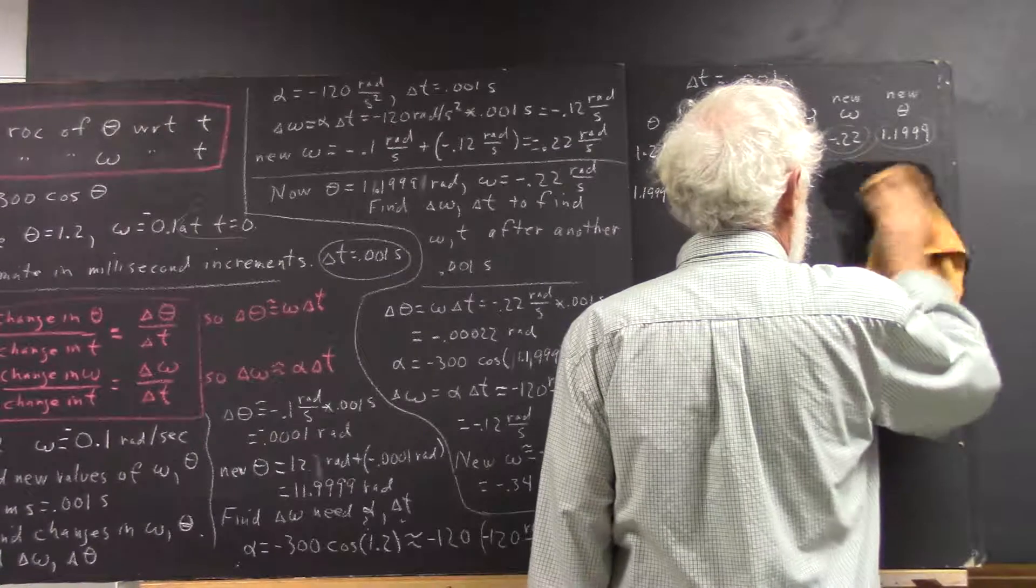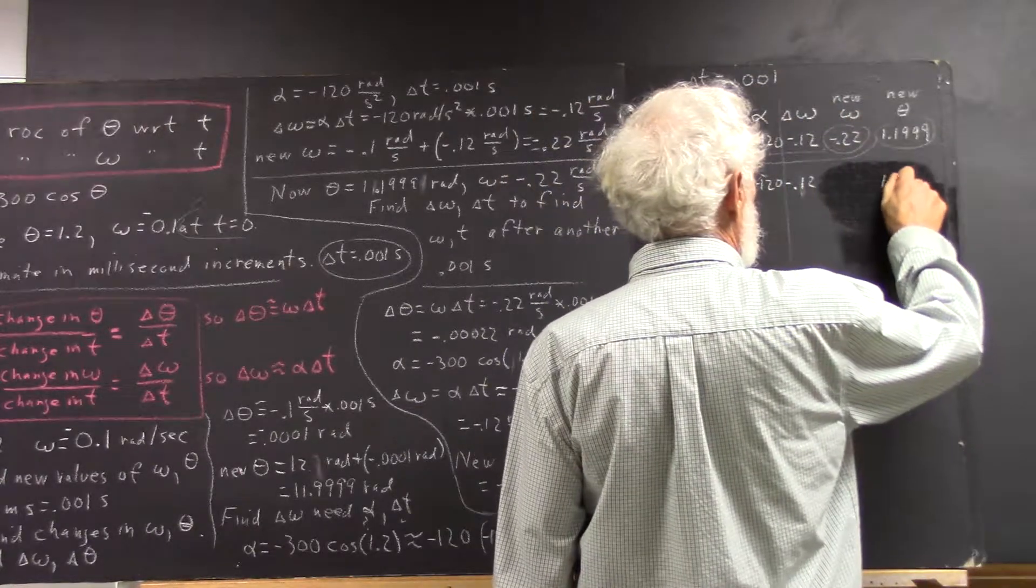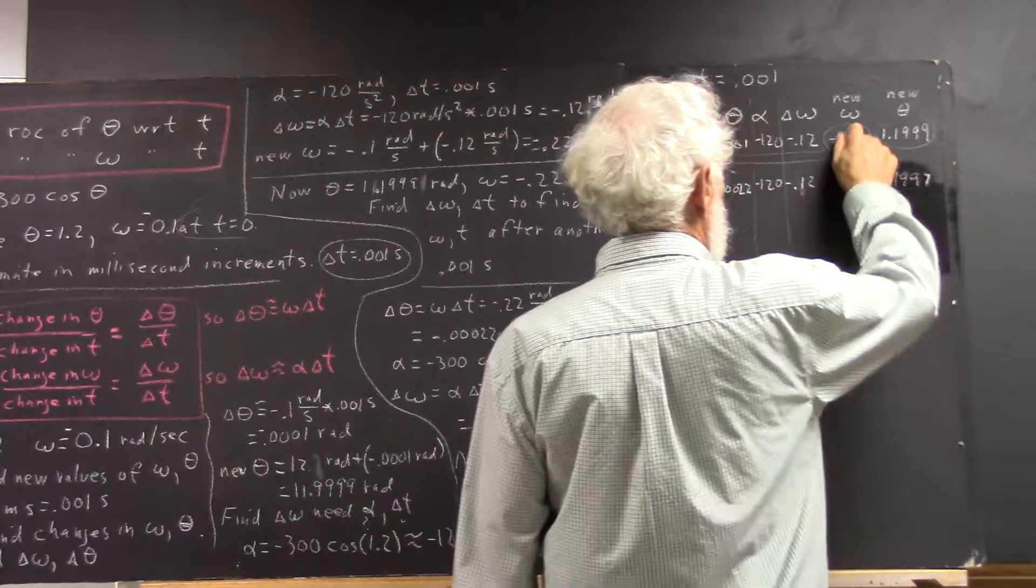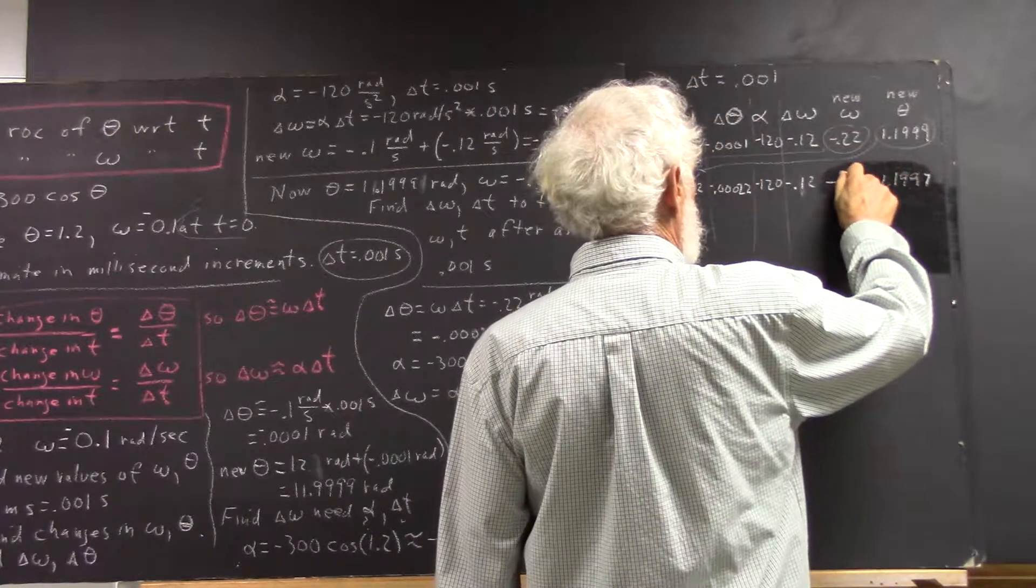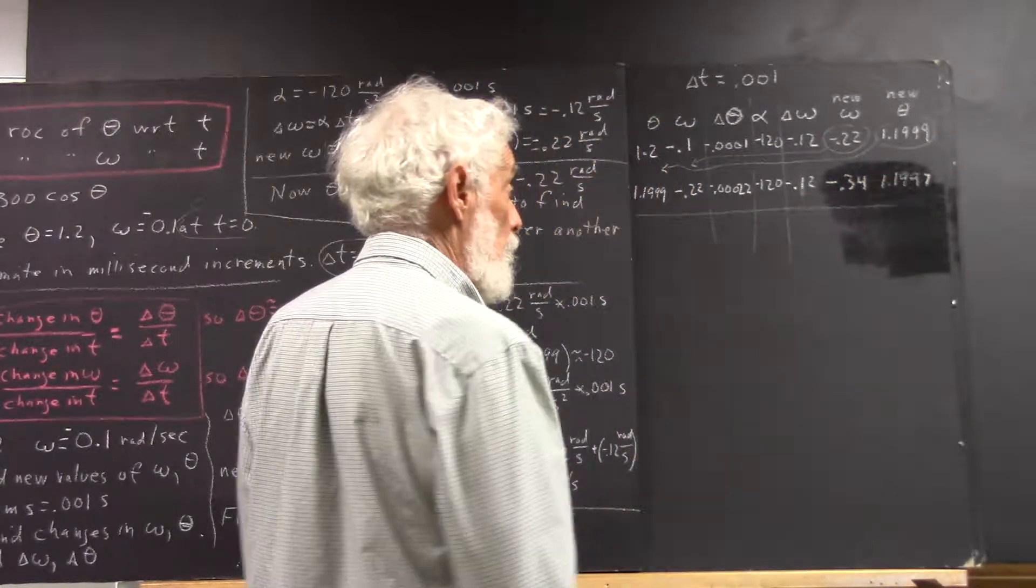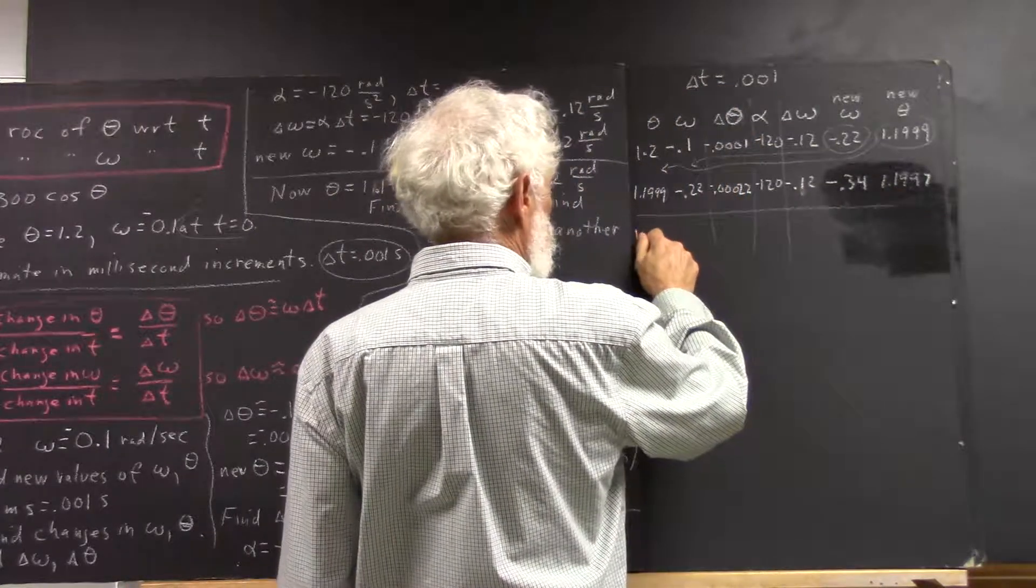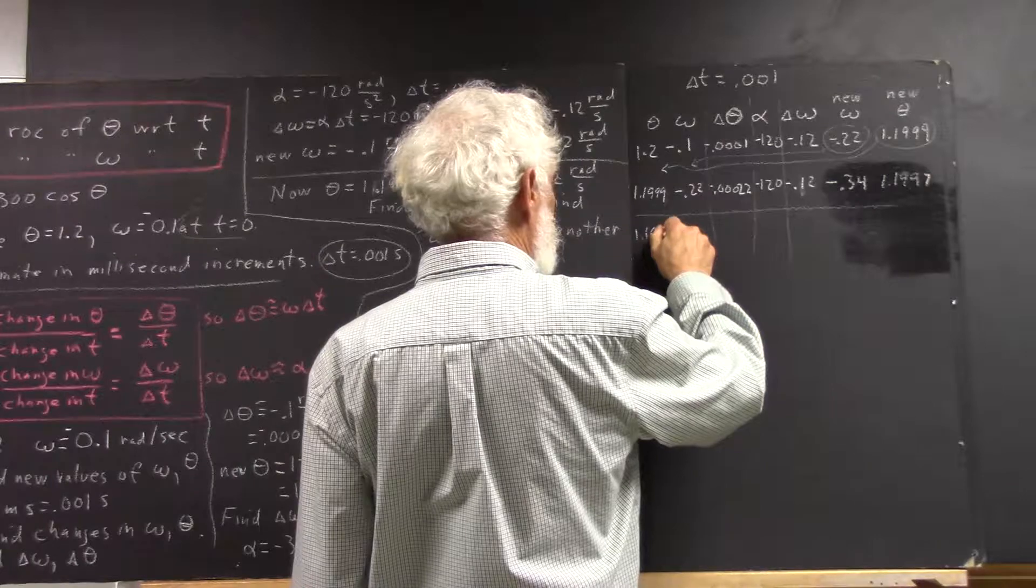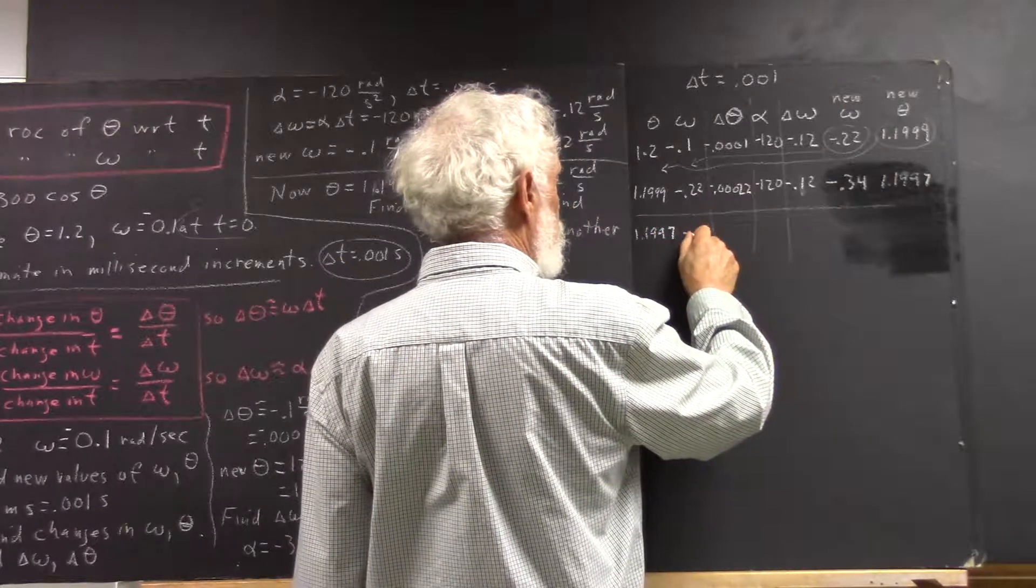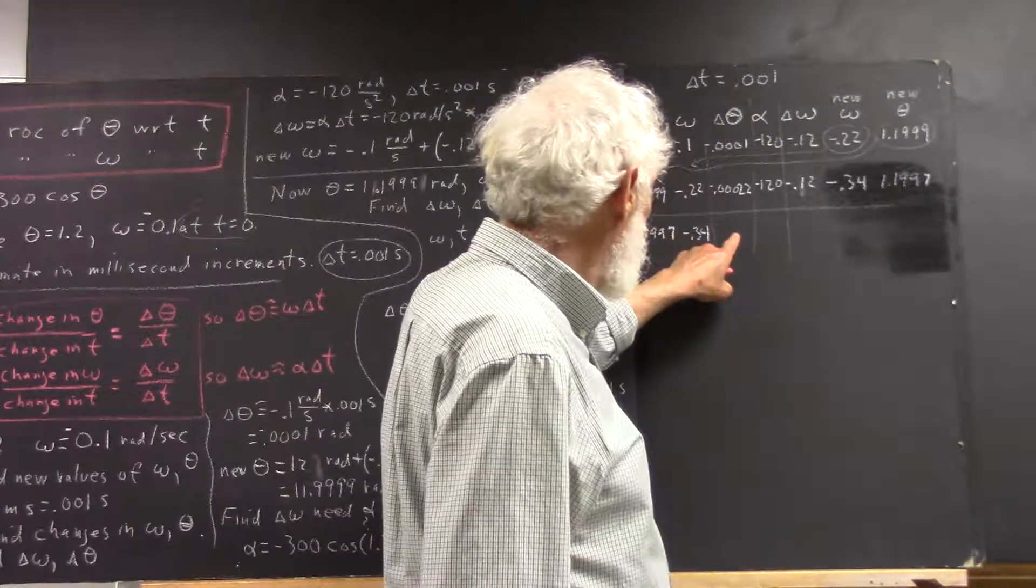It's going to be a little damp here for a minute. So this would be 1.19997, and our new omega would be negative 0.34.